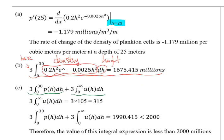The calculation of the number of cells is similar to what I stated in (b)—it includes volume and density but is split into two parts because it's a piecewise function. The first part is from 0 to 30 based on p(h), and the second part is from 30 to infinity based on u(h).